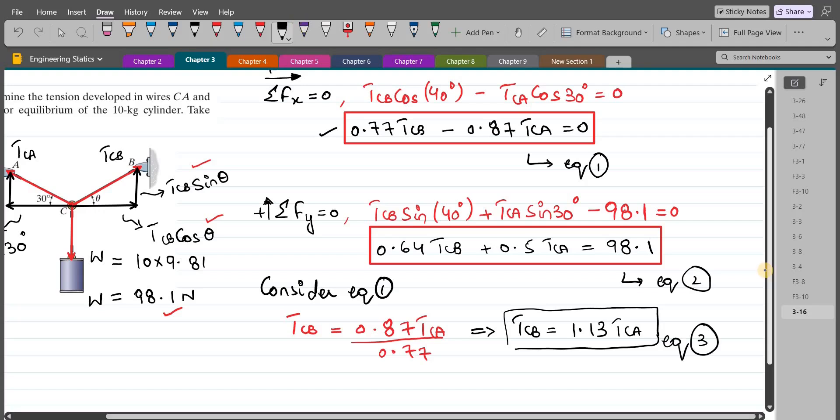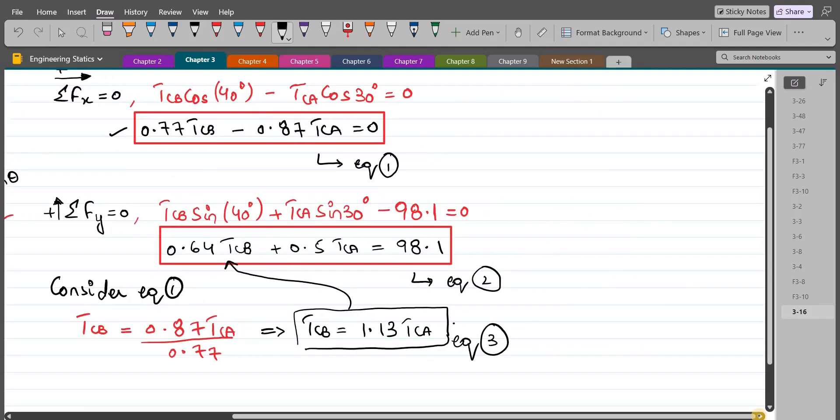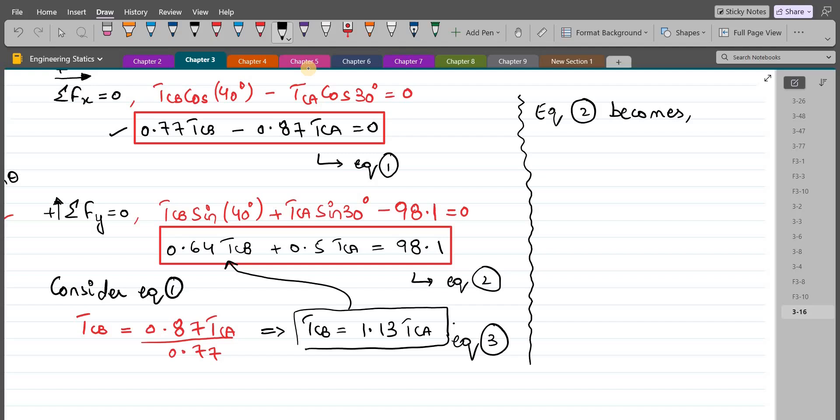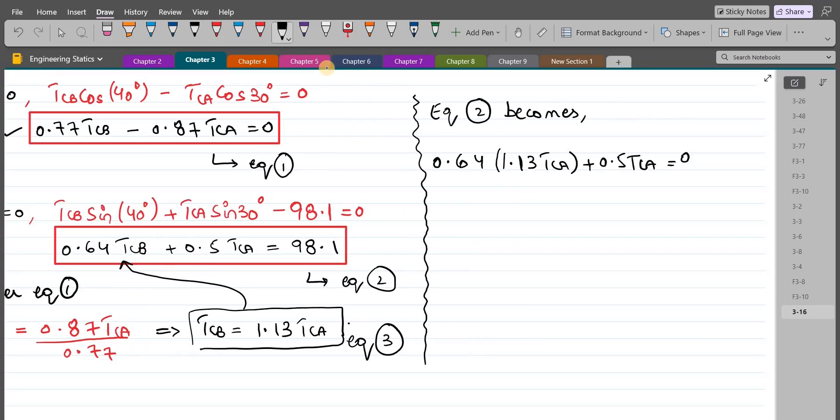Now substitute the value of TCB into equation two. So equation two becomes 0.64, and in the place of TCB we will substitute 1.13 TCA, plus 0.5 TCA equals 98.1.